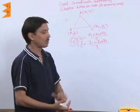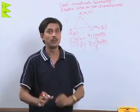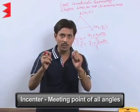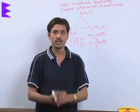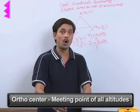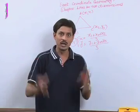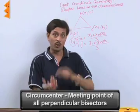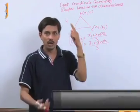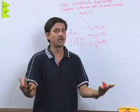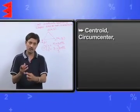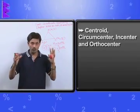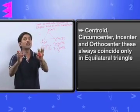So, to find the coordinates of centroid you must be aware there are three, four things. What is incenter? Incenter is the meeting point of all angles. What is orthocenter? Orthocenter is the meeting point of all altitudes. What is circumcenter? It is the meeting point of all perpendicular bisectors. What is centroid about which we are talking? Centroid is the meeting point of all three medians or intersection point of two medians, because centroid, circumcenter, incenter, orthocenter, these always coincide only in equilateral triangle.